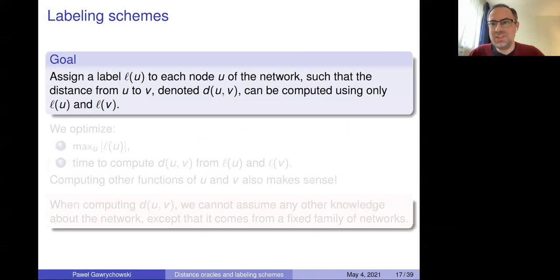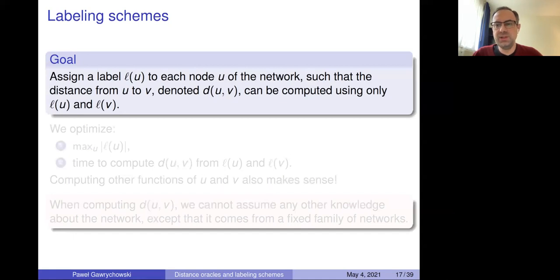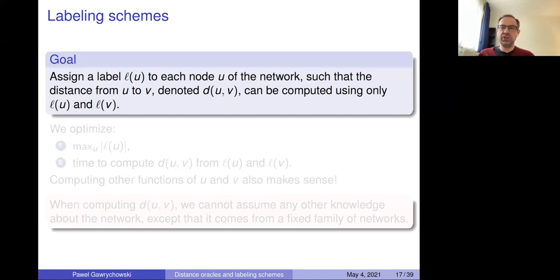Now I'd like to briefly discuss a different model of computation — labeling schemes. This is a distributed model in which you assign a label (a bit string) to each node of the network, chosen so that you can compute the distance between any pair of nodes using just their labels — you can't access the whole graph. You mostly want to optimize the maximum label length over all nodes in some family of graphs. This has been considered for many different functions, not just distance.